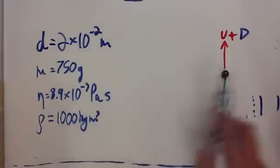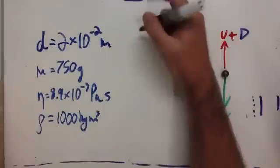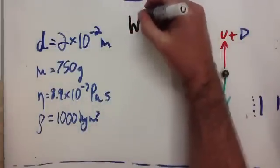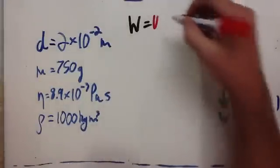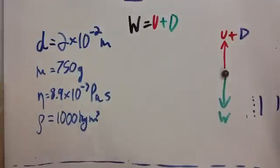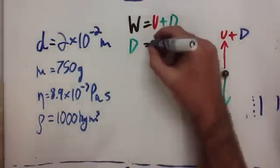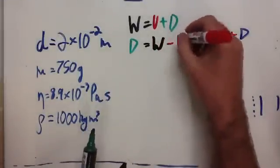So, this all applies to this ball falling at a terminal velocity. So, first of all, we start off with a force equation. So, the weight should be equal to the upthrust plus the drag. So, if we rearrange that, if we want to figure out the force of drag, the drag is equal to the weight of the ball minus the upthrust.